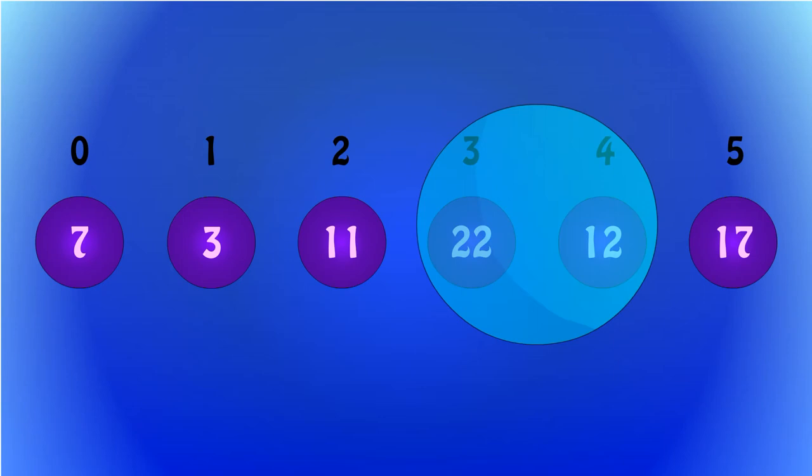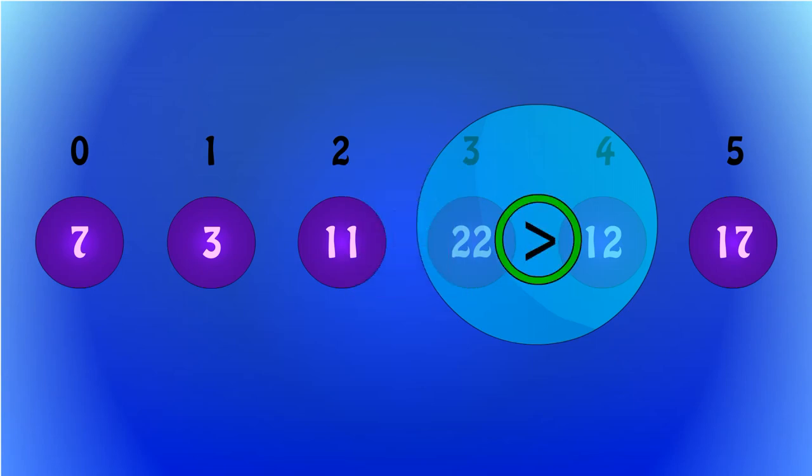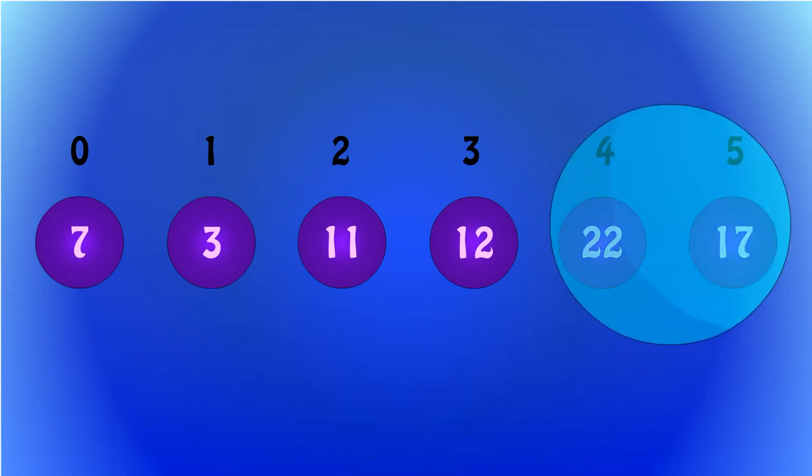This time, 22 is being compared to 12. Take one moment to pause the video and guess what happens. In this case, 22 is greater than 12, so if you said 22 and 12 swap places, then you would be correct. Now the CPU compares 22 and 17. 22 is greater than 17, so they swap places.